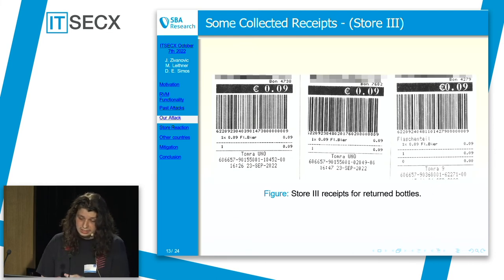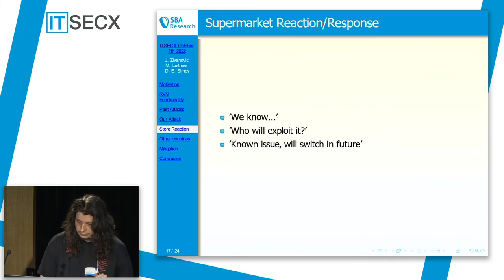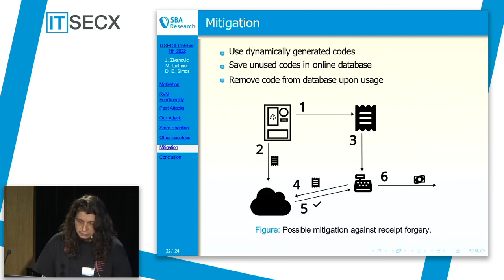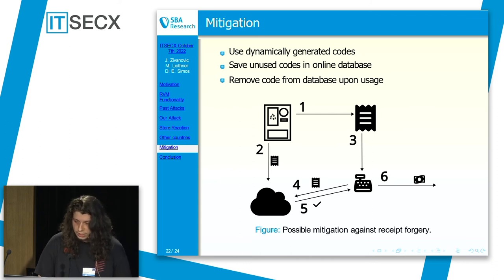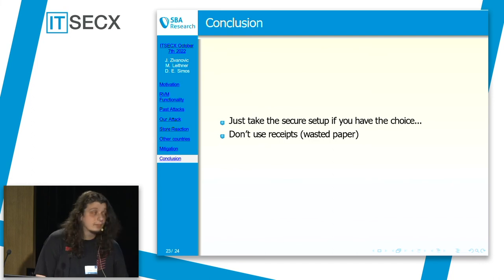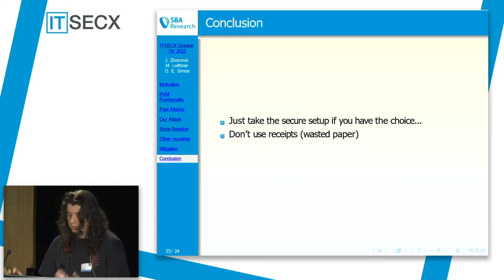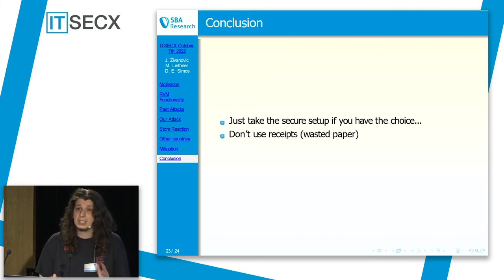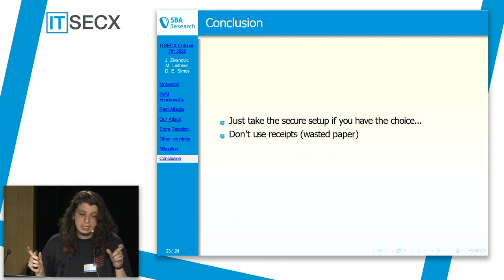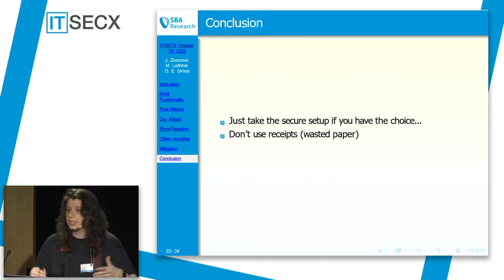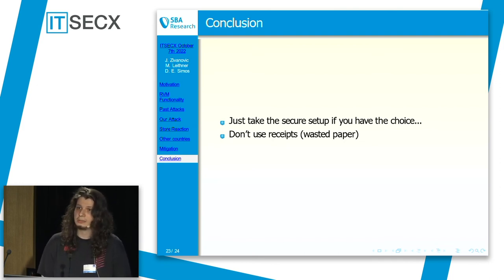We didn't test it out for that store, but we plan to try it in future. After knowing how to exploit and mitigate this problem, what did we learn? Use secure systems if you are given the opportunity, and consider not using paper receipts. There are countries where instead of a receipt you get an email or something on your smartphone, which reduces paper waste and is also potentially more secure.